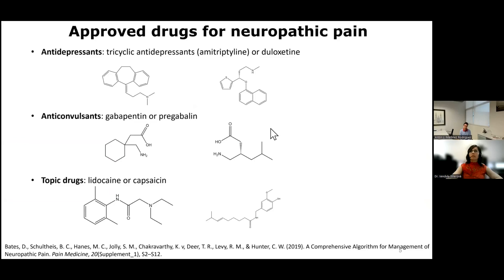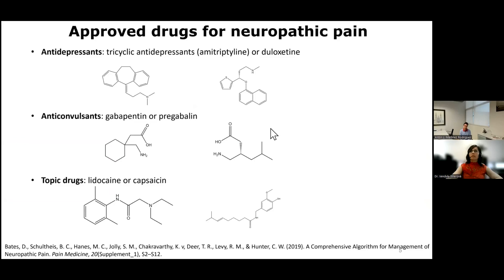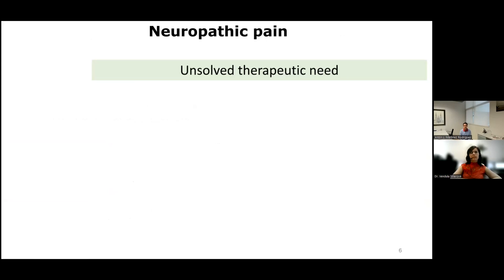There are some drugs for the treatment of neuropathic pain: antidepressants like tricyclic antidepressants, amitriptyline for example, duloxetine; anticonvulsants such as gabapentin or pregabalin; or topical drugs like the local anesthetic lidocaine or the TRPV1 agonist capsaicin. But all those drugs are rather ineffective and may have important adverse effects. Thus neuropathic pain is still an unsolved therapeutic need.